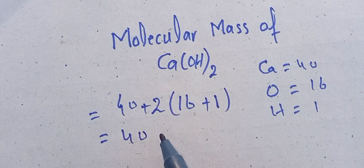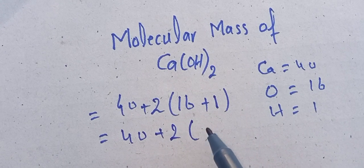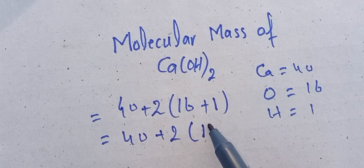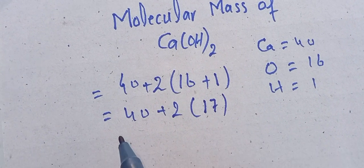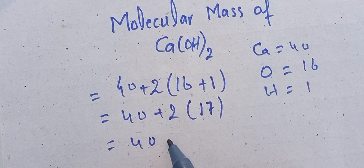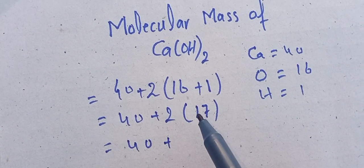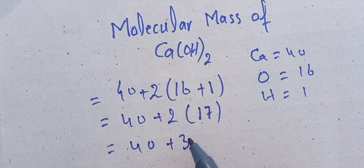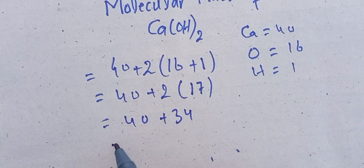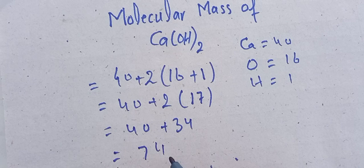40 plus 2 times... 16 plus 1 equals 17, and 40 plus 17 multiplied by 2 equals 34, which gives us 74 grams per mole.